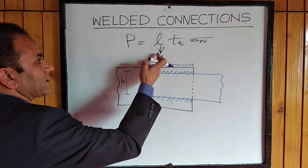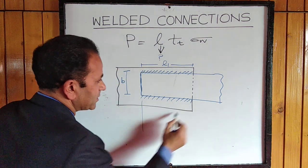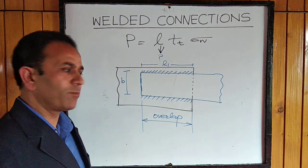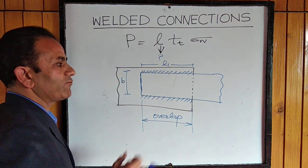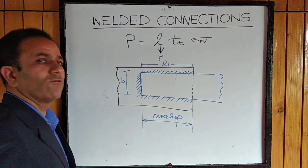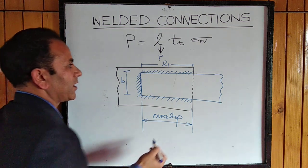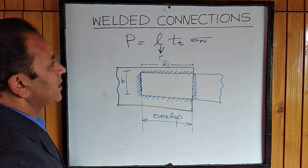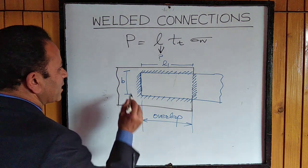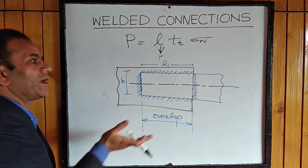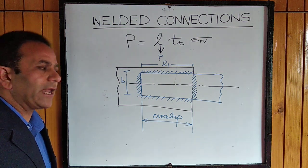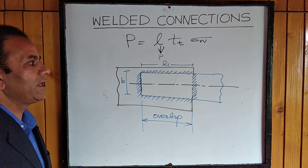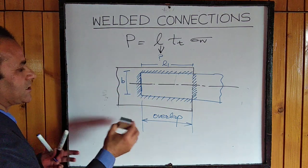If more length is required and the overlap has to be limited for economy, we can provide the weld along a third edge or even a fourth edge. Depending on the length to be provided, the main consideration is that the CG of the weld length provided must coincide with the CG of the member. For a symmetrical member, the length is distributed evenly above and below the axis.